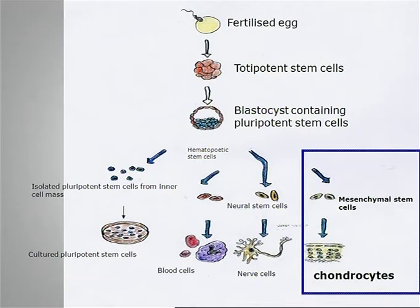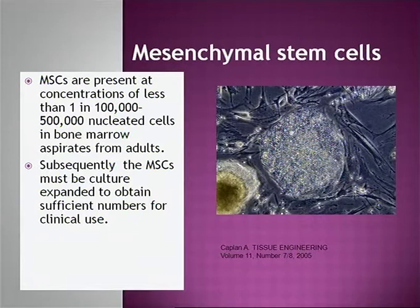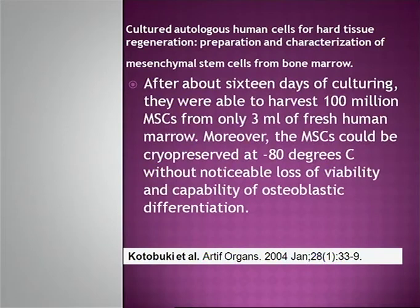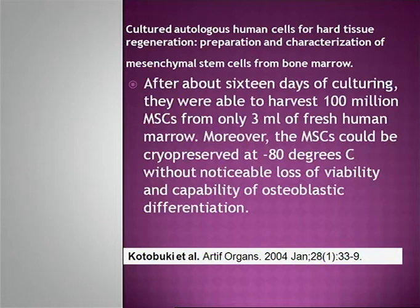The stem cells we are going to talk about are mesenchymal stem cells. We will not focus on embryonal stem cells, which is a more difficult area. MSCs are present at a concentration of less than 1 in 100,000 to 500,000 cells in bone marrow aspirates, and so MSCs must be culture-expanded to obtain enough cells for repair. Kutubok and co-workers showed that after 16 days, they could harvest 100 million cells from only 3 milliliters of fresh human marrow. You could also freeze them for later use.